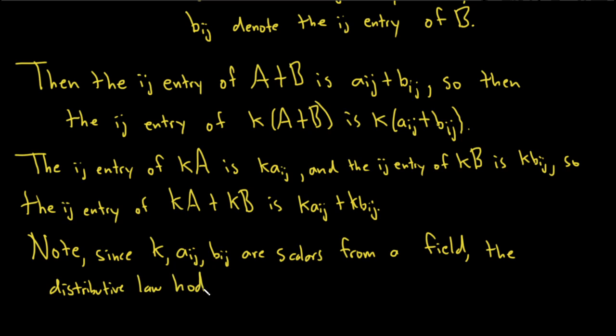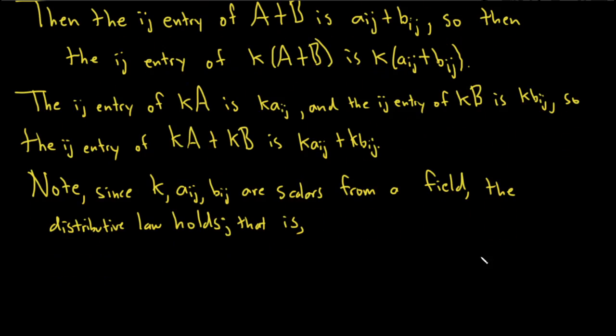That is, we have the following: we have that k times aij plus bij, this is the entry of our matrix on the left. Well, k distributes over this, so that gives us kaij plus kbij. So these are actually equal.